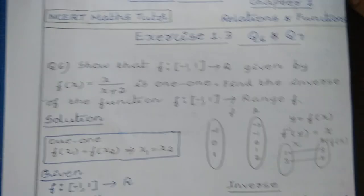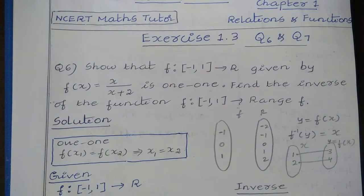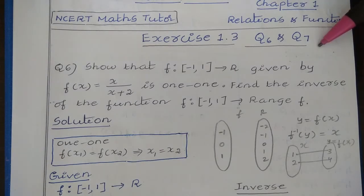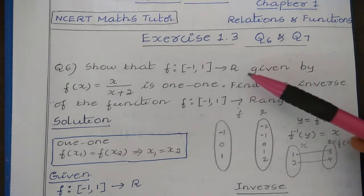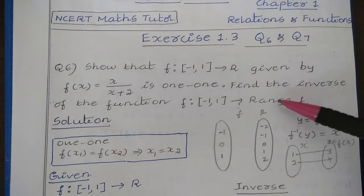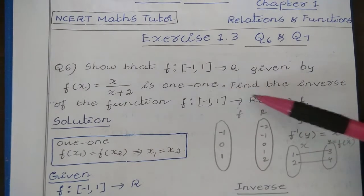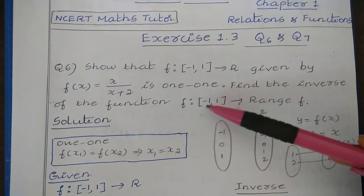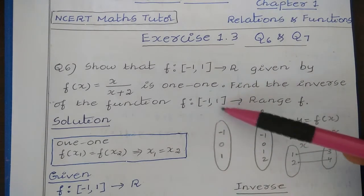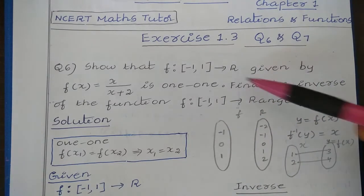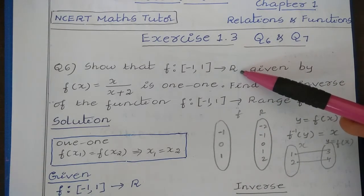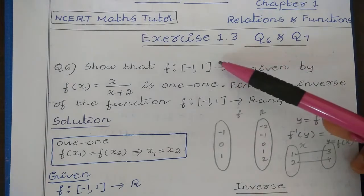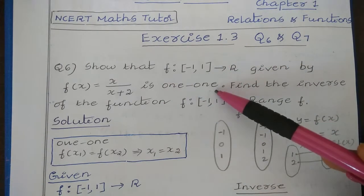Welcome to the channel NCRT Math Tutor, exercise 1.3, question number 6 and 7 solution. Show that f is a function defined from minus 1 to 1 to R, given by f of x is equal to x divided by x plus 2, is 1-1. Find the inverse of the function f defined from minus 1 comma 1 to range of f. Here R means it is the set of real numbers, and they have asked us to show that this function is 1-1.